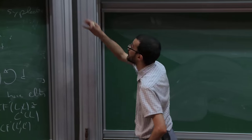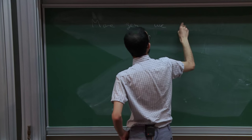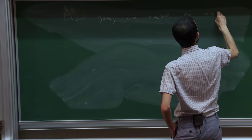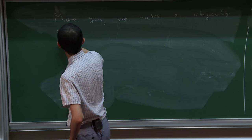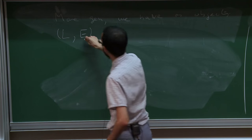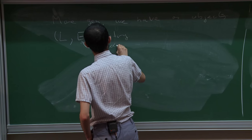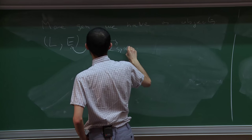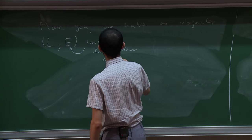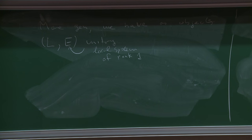Instead of getting d² = 0, you get d²(x) equals something like M₀(L) · x ± x · M₀(L'). So in fact, this has a generalization — this is already in FO³'s work — more generally, we have as objects Lagrangians L together with something I will denote E, and this is a unitary local system.